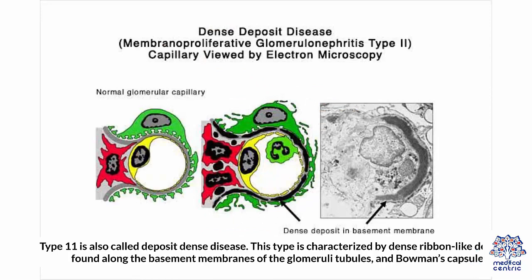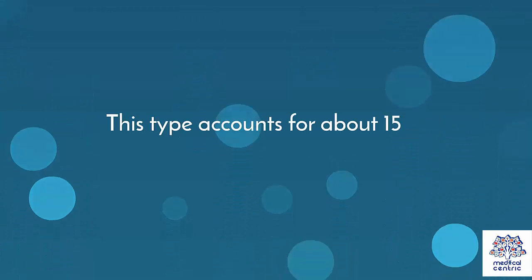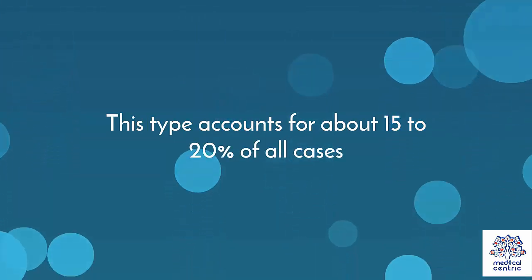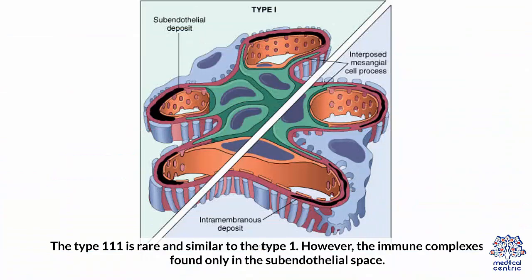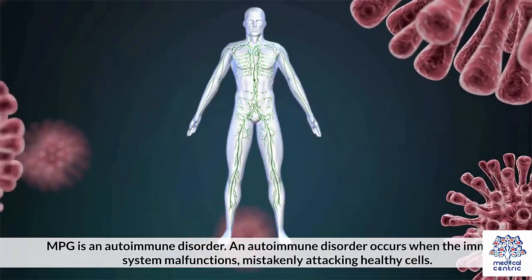Type 2 is also called dense deposit disease. This type is characterized by dense, ribbon-like deposits found along the basement membranes of the glomeruli, tubules, and Bowman's capsule. This type accounts for about 15-20% of all cases. Type 3 is rare and similar to type 1. However, the immune complexes are found only in the subendothelial space.